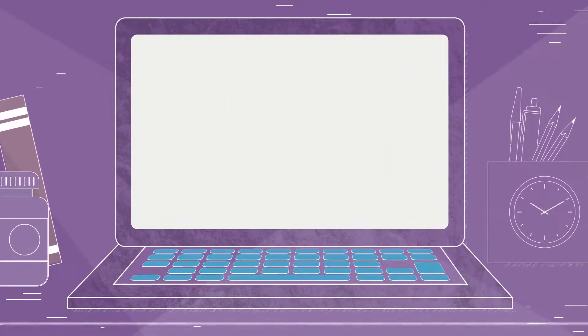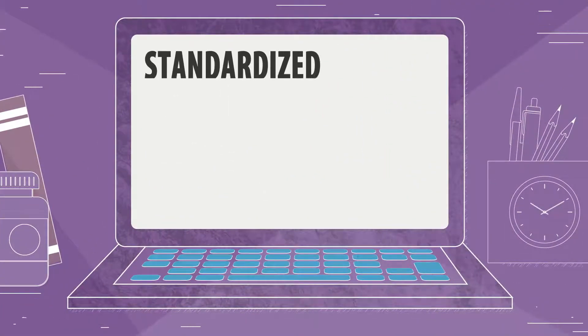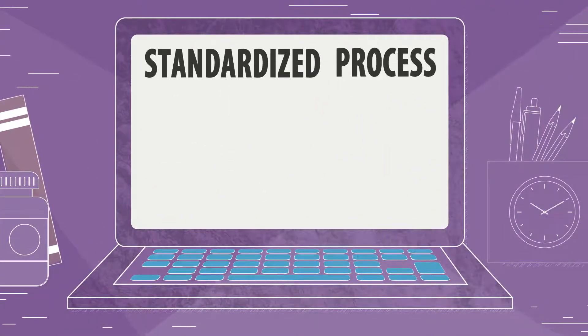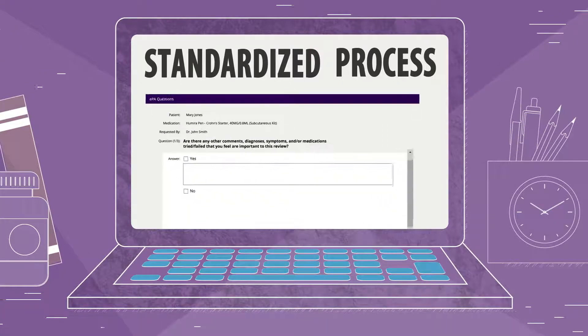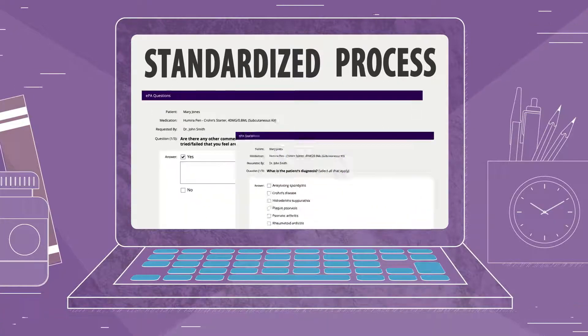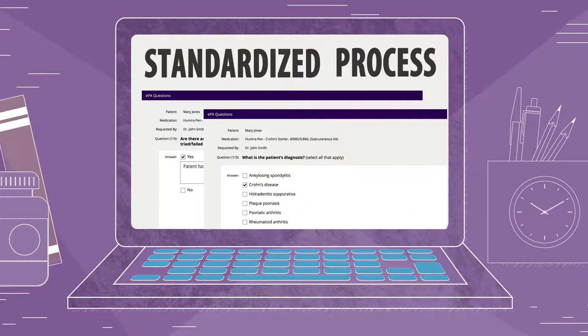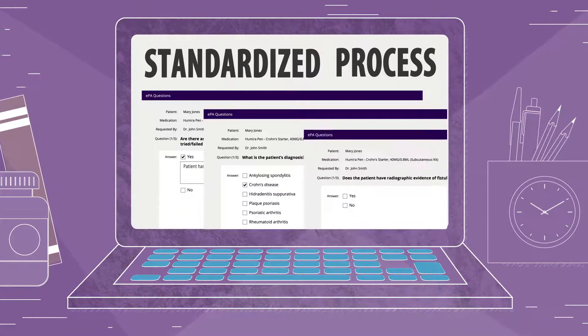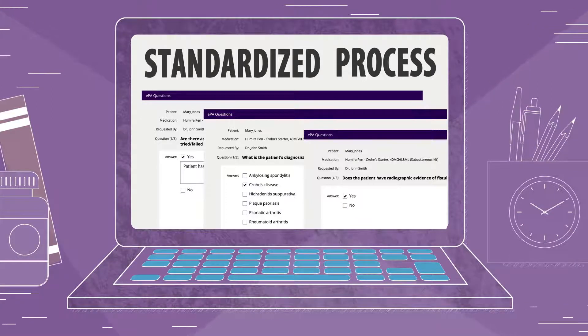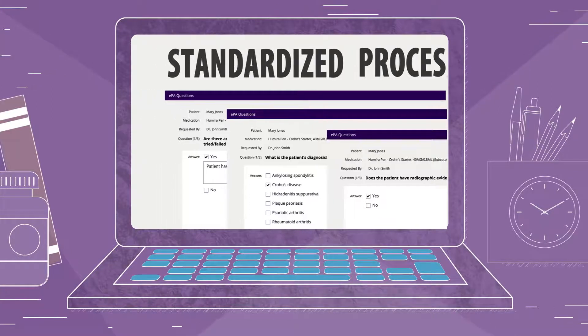Pharmacy EPA uses a standardized process based on electronic question sets. Although the questions may vary by health plan, the general look and feel of the process is the same for all patients.